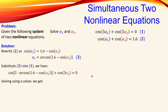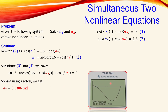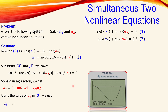We can now solve the resulting expression using a solver, such as a calculator or any other program. Looking at the graphical output from the Texas Instruments emulator, we can see from the graph that α₂ equals 0.1306 radians — since the cosine argument is in radians. Converting to degrees, that gives approximately 7.482 degrees.